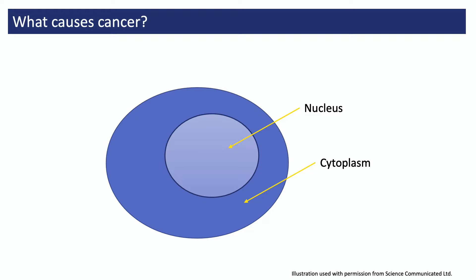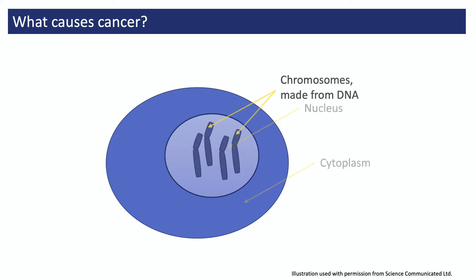We'll begin with the fact that our cells have two main compartments: the main body of the cell, the cytoplasm, and then inside the cytoplasm is the nucleus. Inside that nucleus are our cells' chromosomes, which are made from DNA, our genetic material. It might be helpful to think of DNA as our cells' internal reference library — a store of information that our cells refer back to over and over again.